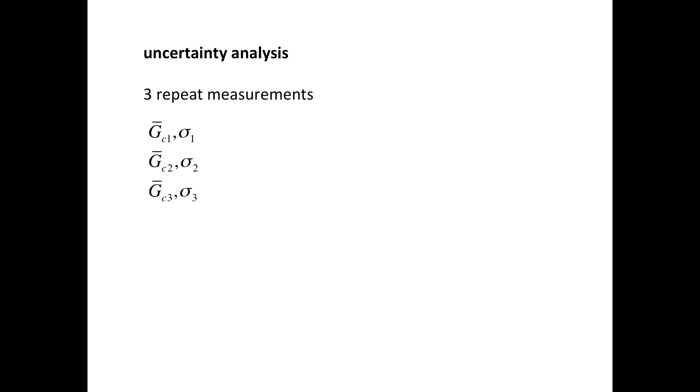That will result in three measures of adhesion, denoted here by Gc, and their associated standard deviations, denoted by sigma. To combine these three measurements into a single value, we use a weighted mean and its uncertainty given by these two expressions.